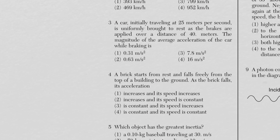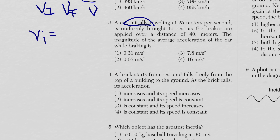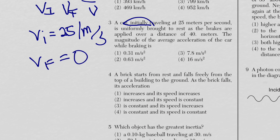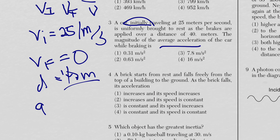For question 3, a car initially traveling at 25 meters per second is uniformly brought to rest over a distance of 40 meters. List your variables: initial velocity VI = 25 m/s, final velocity VF = 0 (brought to rest), distance D = 40 meters. We're looking for acceleration A, but we don't have time, so we can't use the basic a = Δv/t equation.